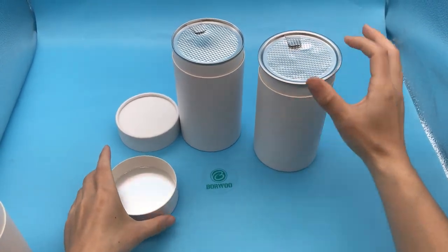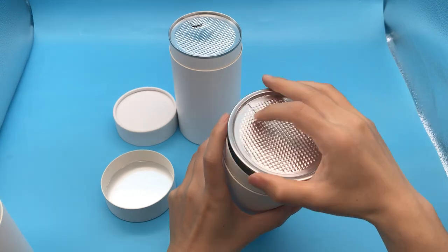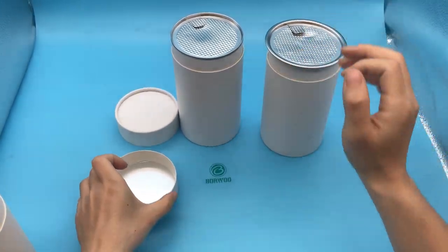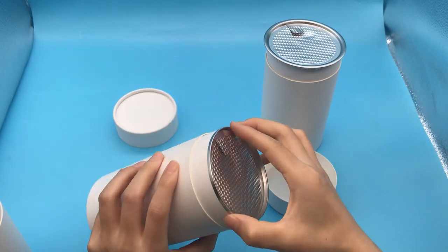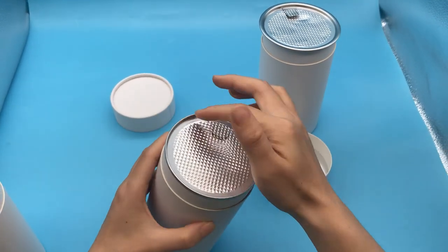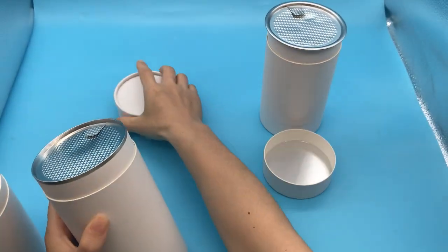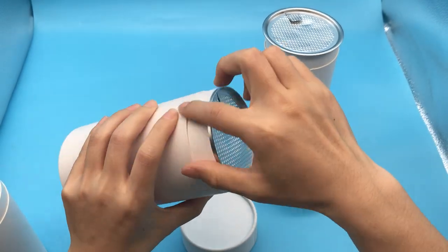And using the machine to seal it so users can tear, like this. After sealing, seal the outer layer.